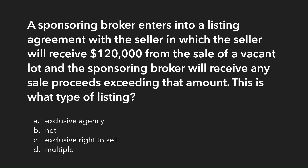Question three: A sponsoring broker enters into a listing agreement with the seller in which the seller will receive $120,000 from the sale of a vacant lot, and the sponsoring broker will receive any sale proceeds exceeding that amount. What type of listing is this? Options are exclusive agency, net, exclusive right to sell, or multiple. Based on the setup, the broker is going to net the difference after the seller gets $120,000.